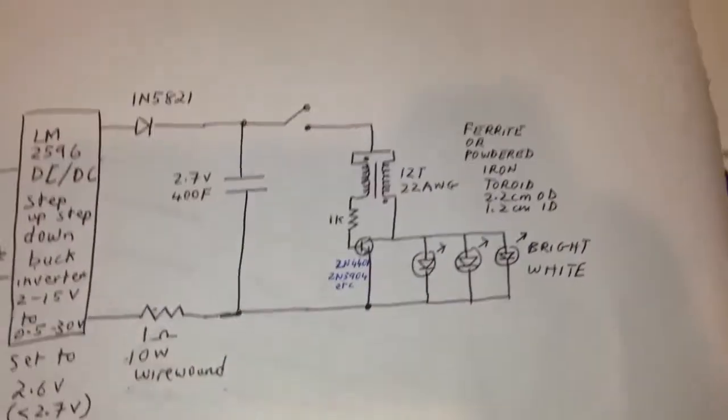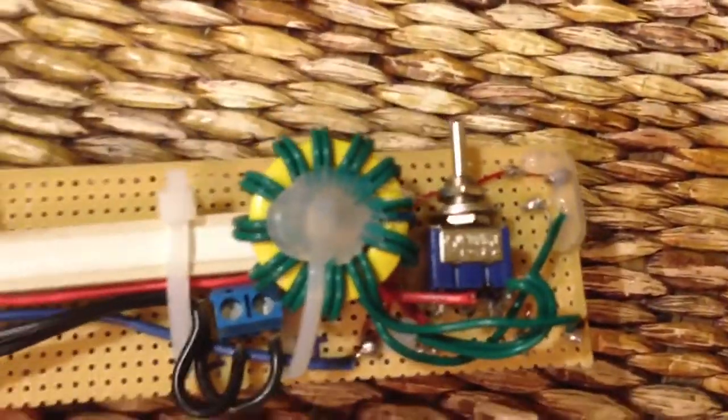And here are some of the finished products. Here's one of the ones put together. You've got your cigarette lighter adapter here. Your ultracapacitor 400F. Put it on a piece of perfboard. Put your wire round resistor. The toroid.